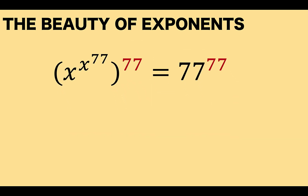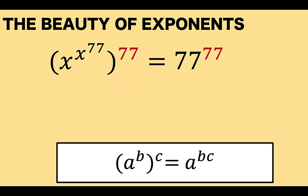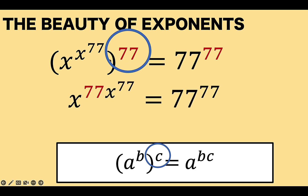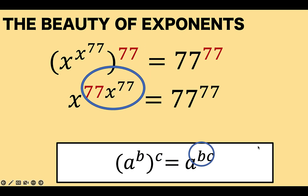Now, let's recall some properties of exponents, particularly the power-of-power rule. The left side of our equation is exactly in the form a raised to b, all raised to c. The base is x, our exponent b is x raised to 77, and our exponent c is 77. Simplifying this, we have the base x and the product of the two exponents: x raised to 77 times 77, which equals 77 times x raised to 77. That is our b times c.